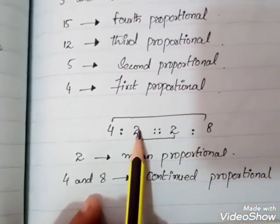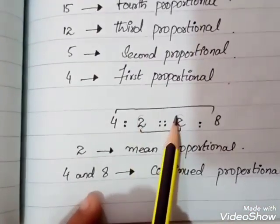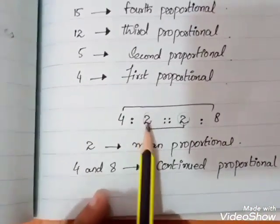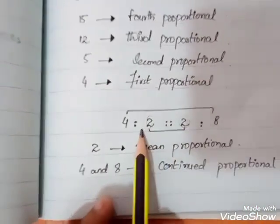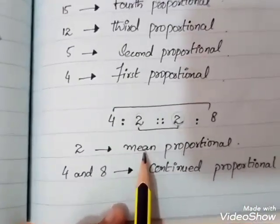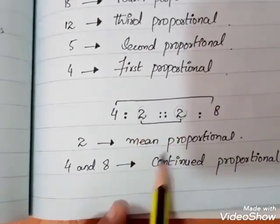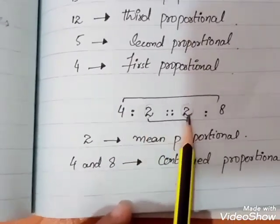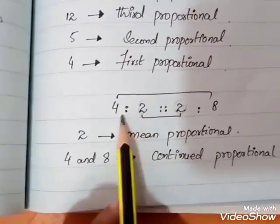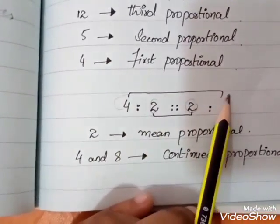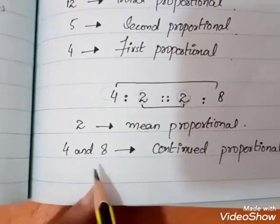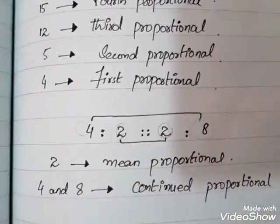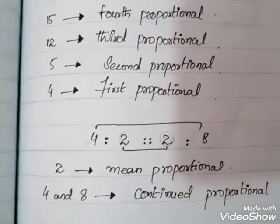If you write it in terms of mean values, and if both the same values are in the middle, then that is called mean proportional. And if values like 4 and 8 follow a pattern, that is called continued proportional.